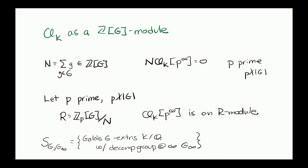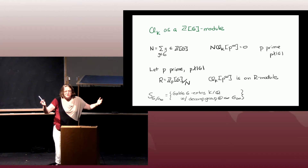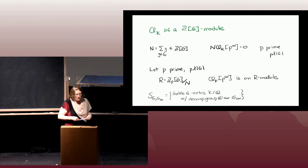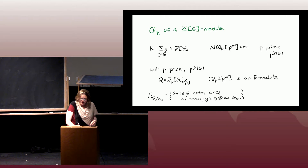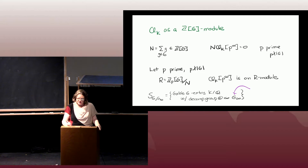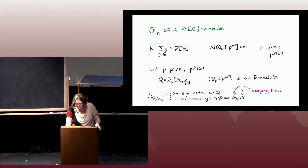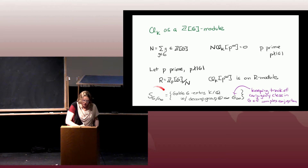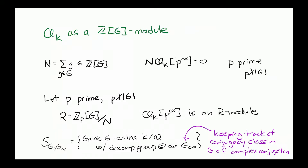As before in the quadratic case, we separated fields based on their behavior at infinity, and that can get more complicated for larger G. So we're going to keep track of the decomposition group at infinity, G_infinity, which is a subgroup of G. That is a group of order two — the conjugacy class in G where complex conjugation lands. So the set S_{G, gamma} is going to be all G extensions that have a particular behavior at infinity, meaning complex conjugation acts as a certain conjugacy class in G.